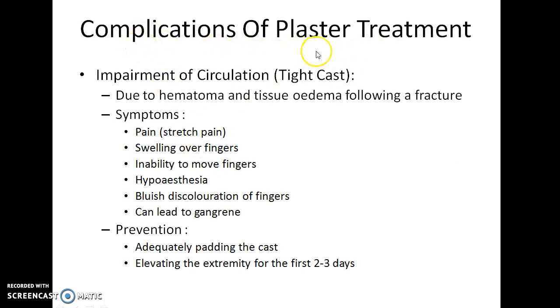What are the complications of plaster treatment? Impairment of circulation — tight cast. This is due to hematoma and tissue edema following a fracture.